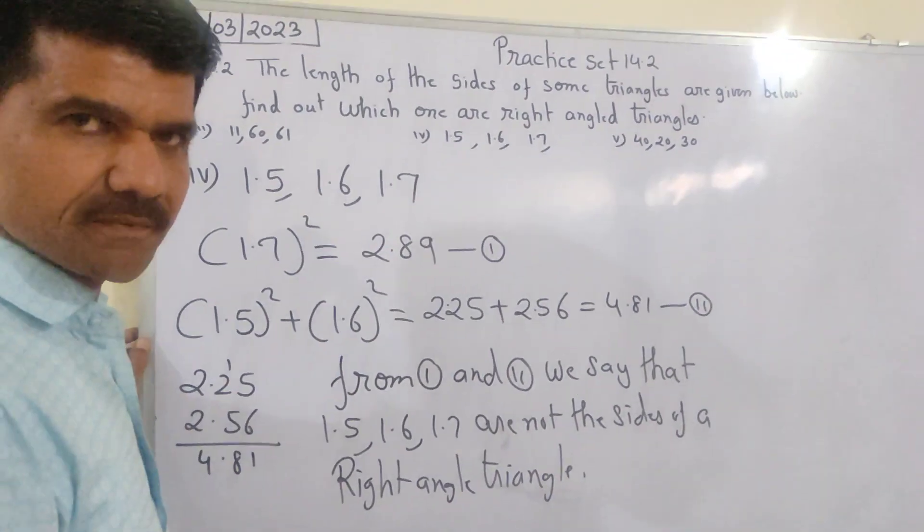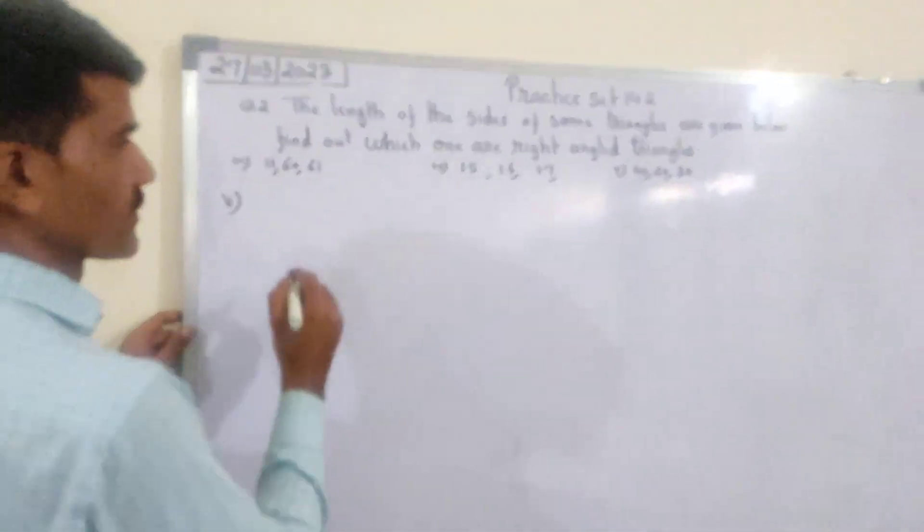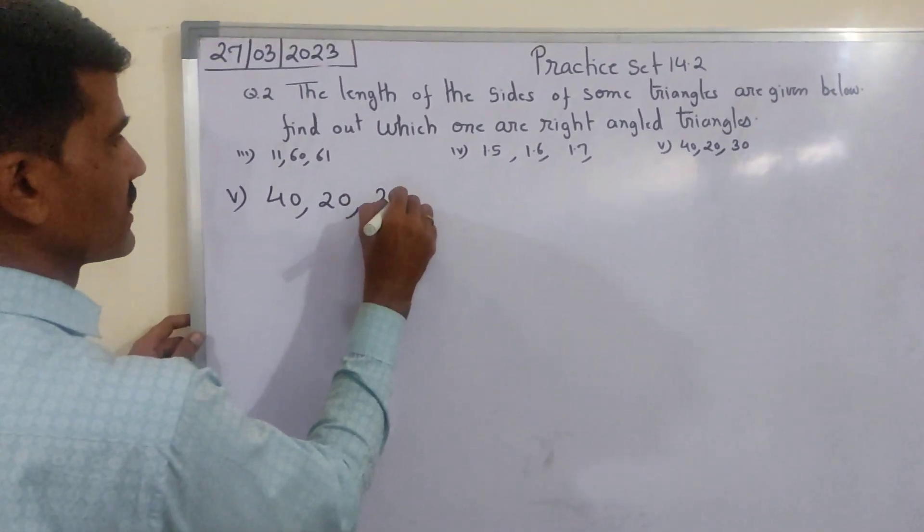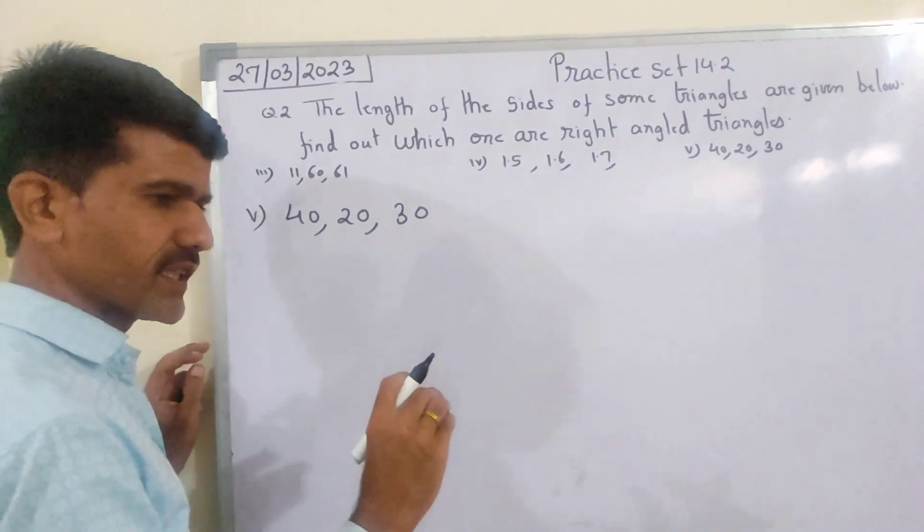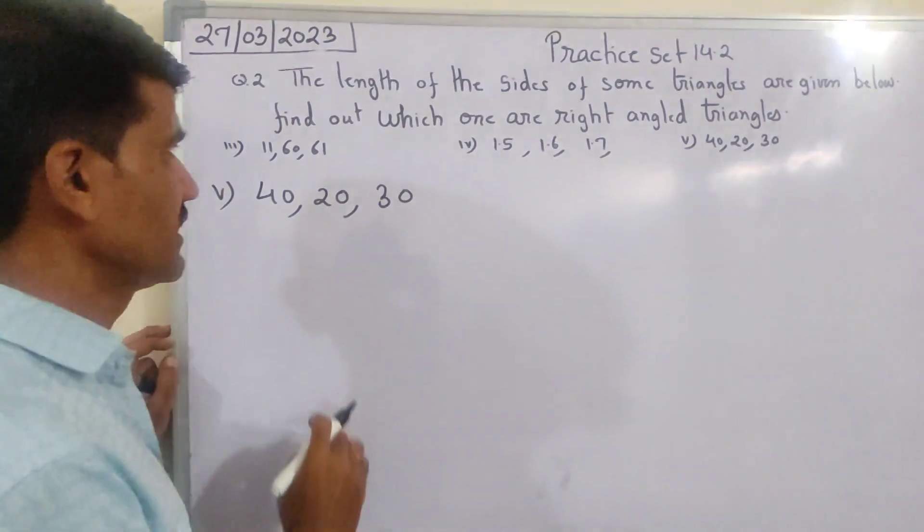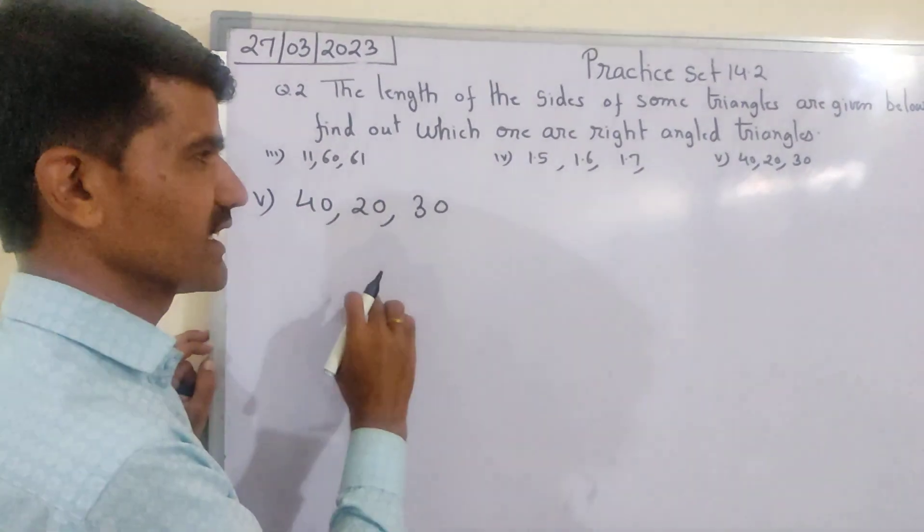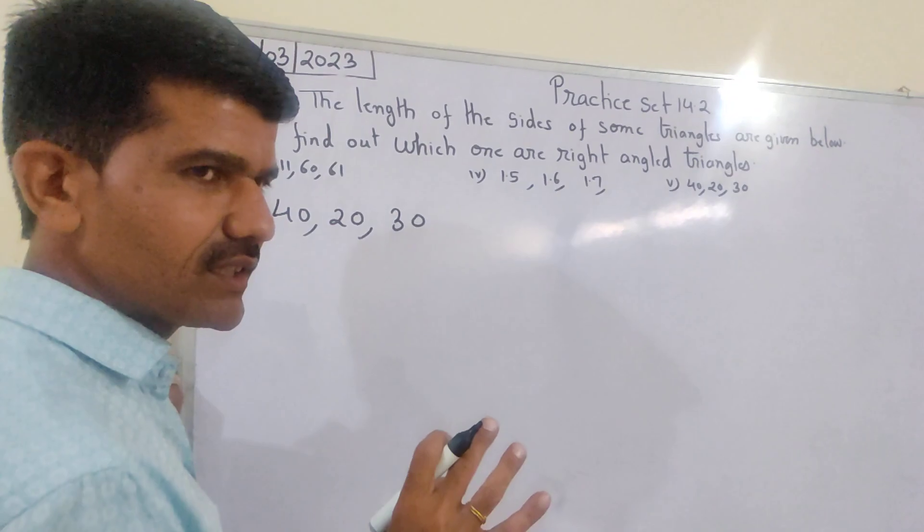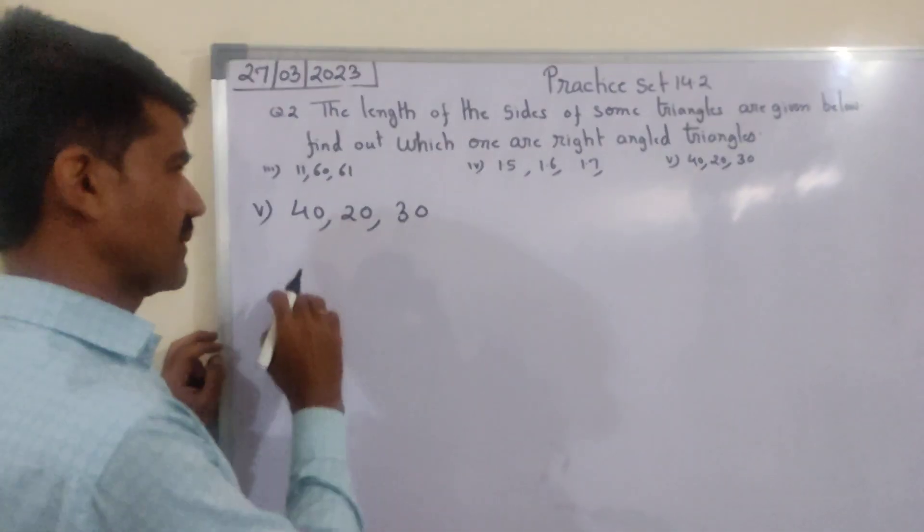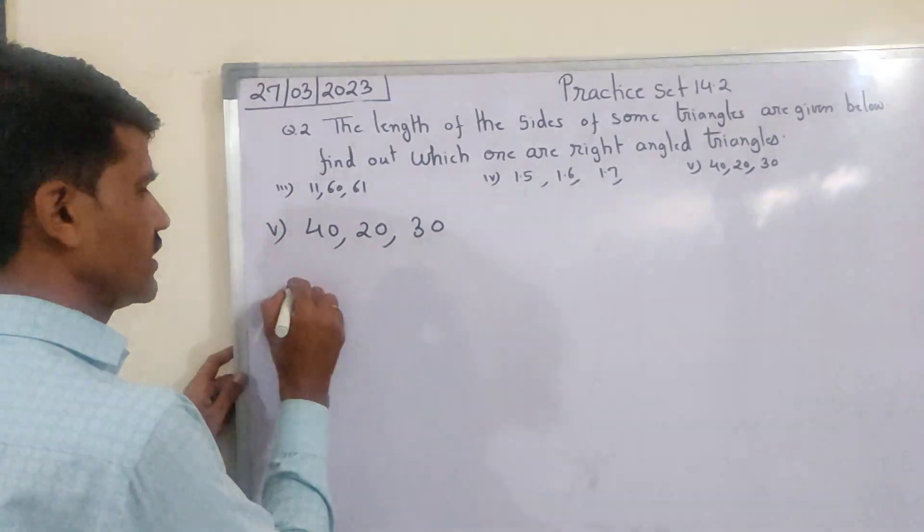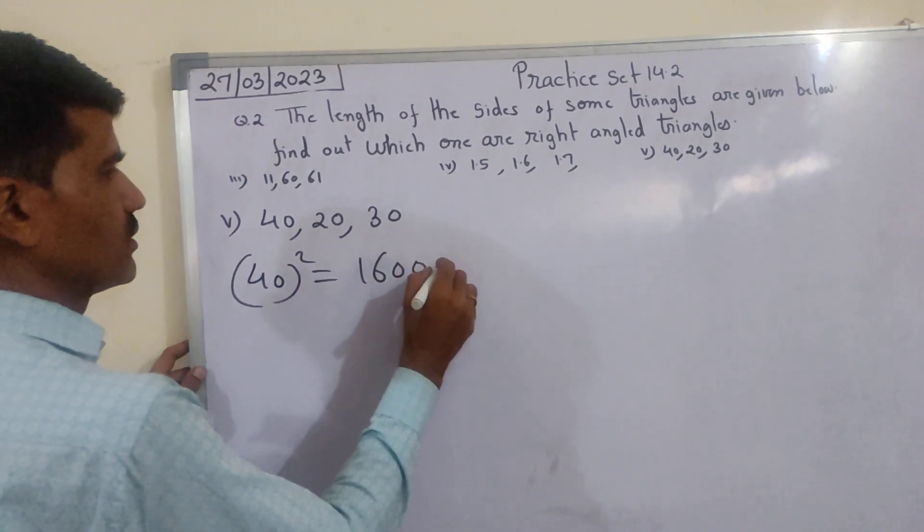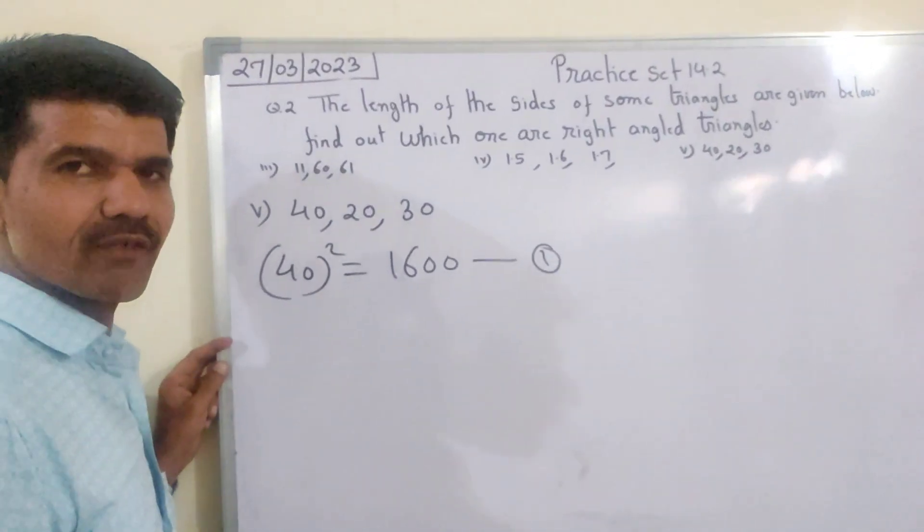Chalo, paanch number, aakhri ka: 40, 20, 30. Sequence mein dena zaruri nahi - 20, 30, 40 jaise 11, 60, 61 varga diya tha. Zaruri nahi number aage pichhe hai toh bhi chalega, par 3 number hona. Chalo, sab se badi side ko hai 40. 40 ka square: 4 ka 16 or 2 zero, chukka ke 2. 40 ka square 1600.